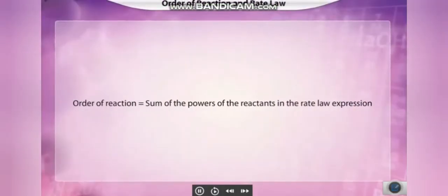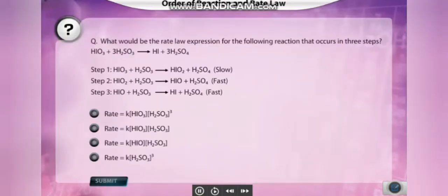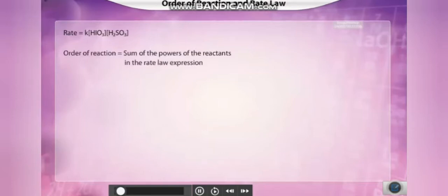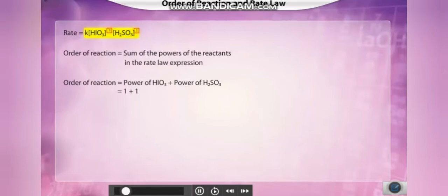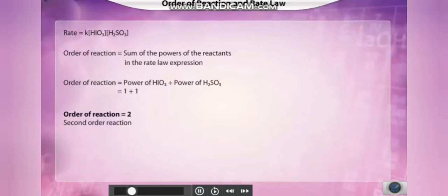Order of reaction is defined as the sum of the powers of the reactants in the rate law expression. Once we have the rate expression of a reaction, it is easy to find the order. We sum up the powers of the reactants. Here, there are two reactants each raised to the power of one, so the sum is two — making this a second order reaction.